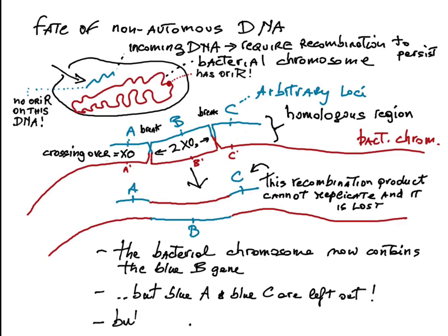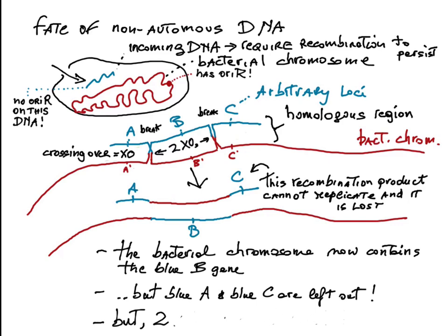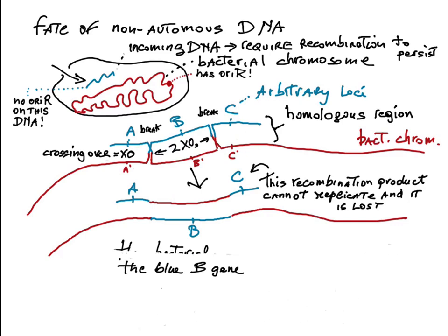Important: because the incoming non-autonomous DNA is typically linear, an even number of crossing over events must take place for successful exchange. To demonstrate this principle, let's consider the effect of a single crossing over.